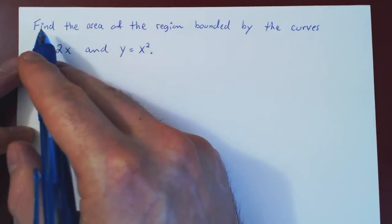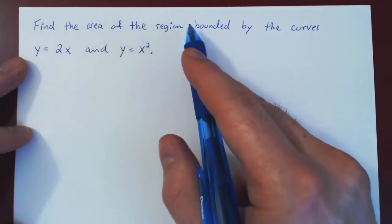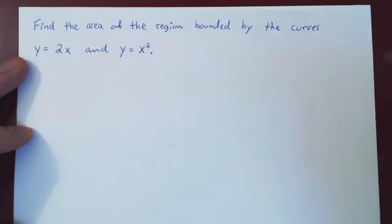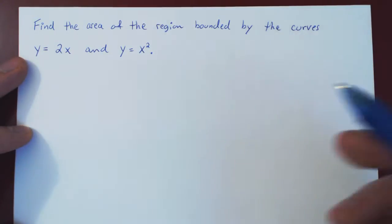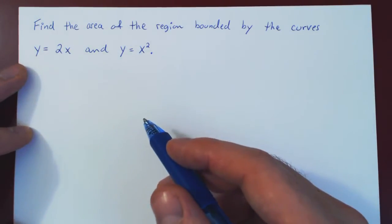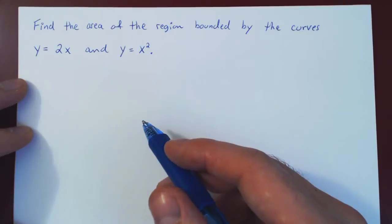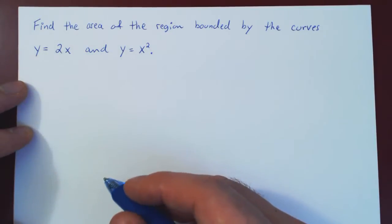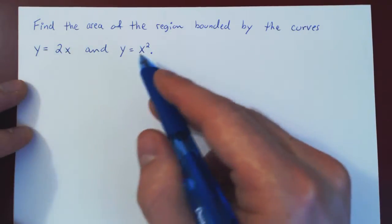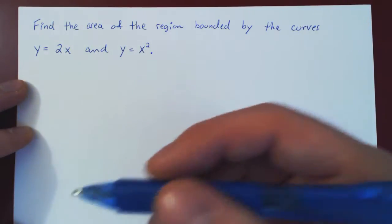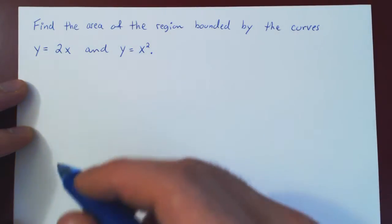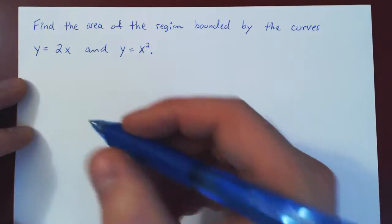Here is such an example. We want to find the area of the region bounded by the curves y equals 2x and y equals x squared. The first step will be sketching this region in the xy plane. So let's first find our points of intersection — where will these curves meet? That should always be your first step before you attempt to sketch, because sometimes you'll encounter more complicated curves that give you more complicated regions.